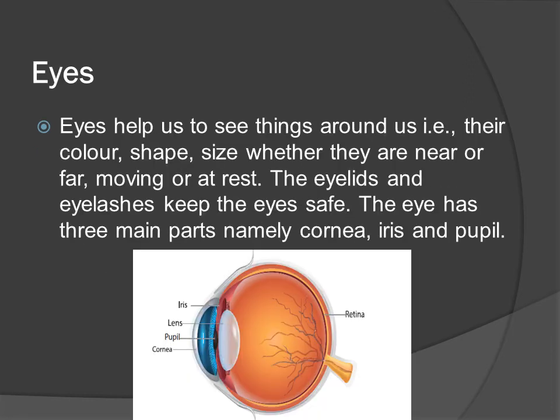Eyes help us to see things around us — their color, shape, size, whether they are near or far, moving or at rest. The eyelids and the eyelashes keep the eyes safe. The eye has three major parts: cornea, iris and pupil. Other structures include the lens and retina.